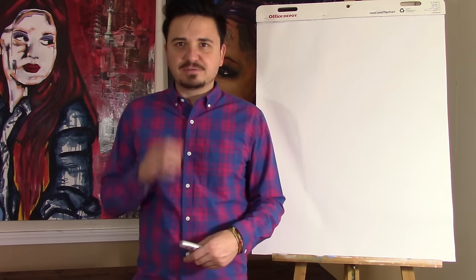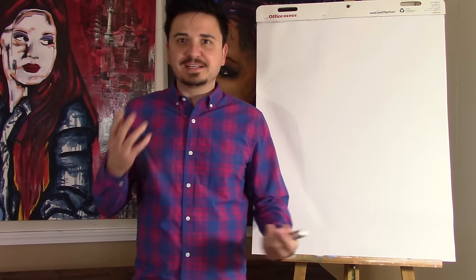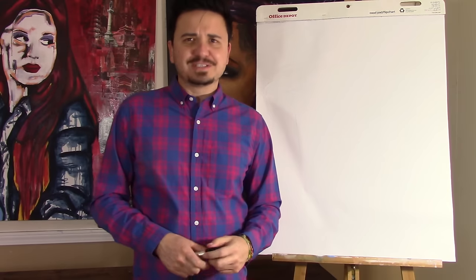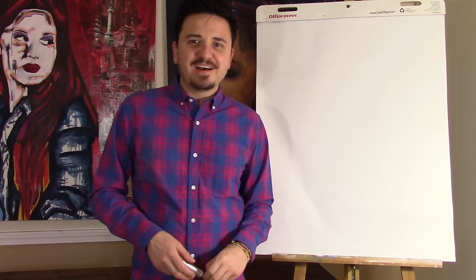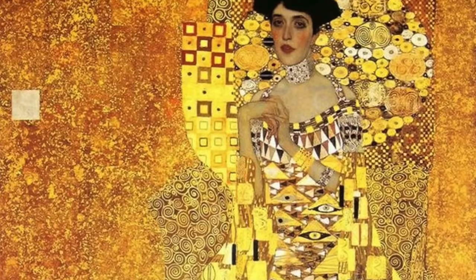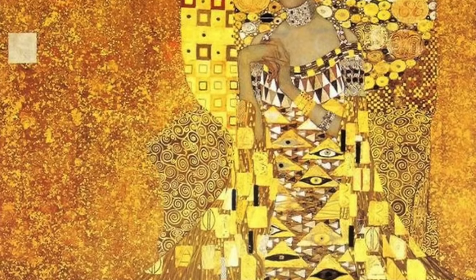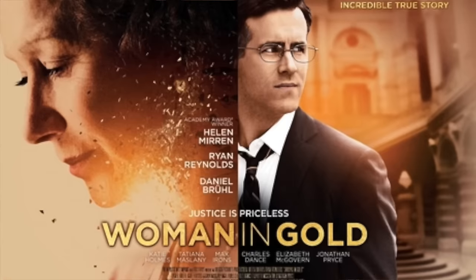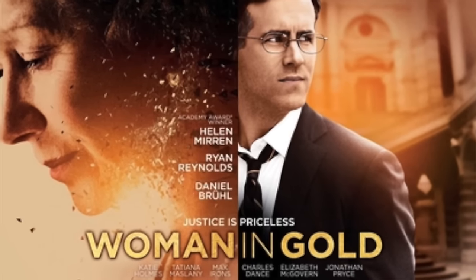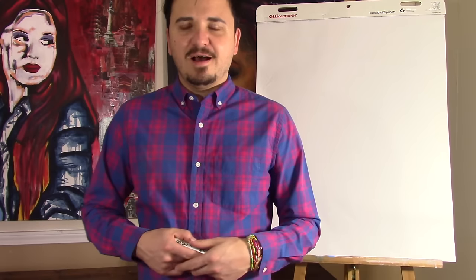An interesting thing about Gustav Klimt: they think he fathered 14 children, which is a lot. Another interesting fact is that they made a movie about one of his paintings, which is Adele Bloch-Bauer. She's dressed in complete gold, and the movie is called The Woman in Gold. It's a very interesting movie with Ryan Reynolds — I recommend you watch it. But we won't be doing this painting.